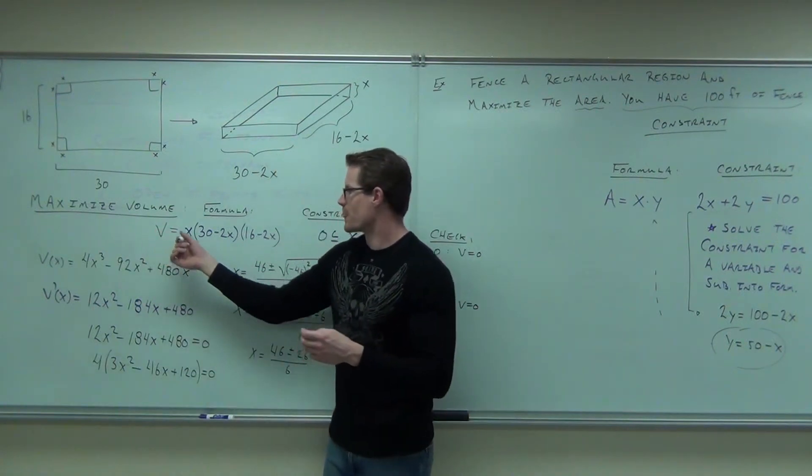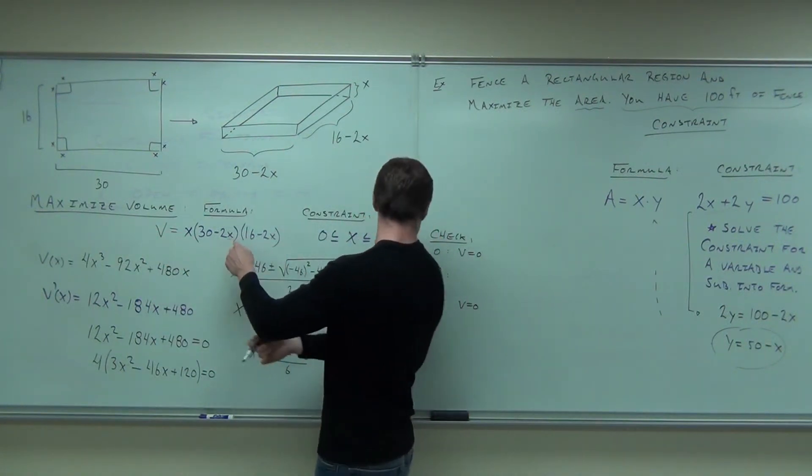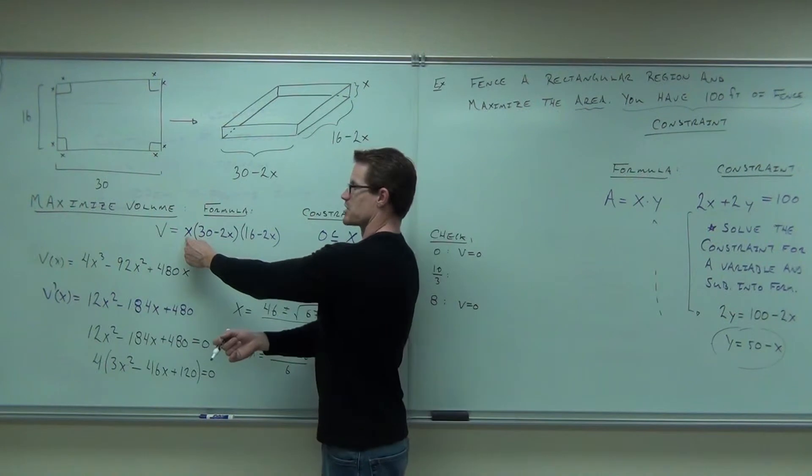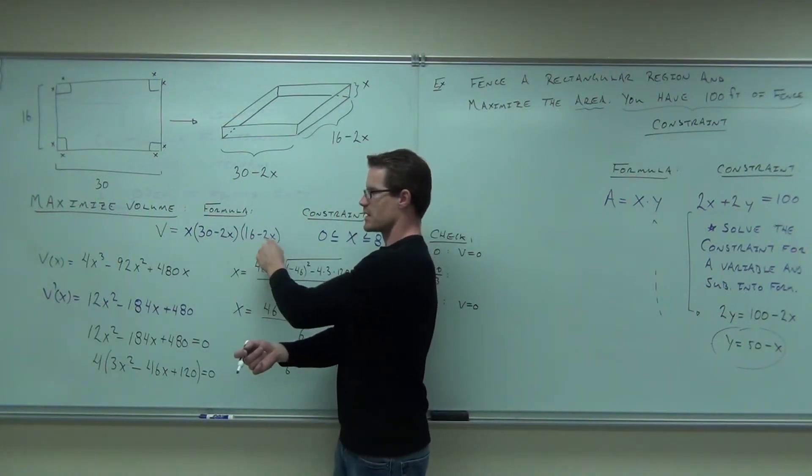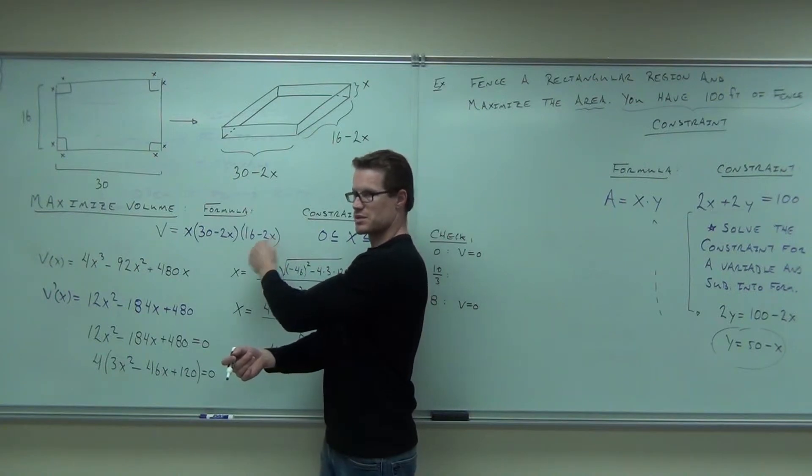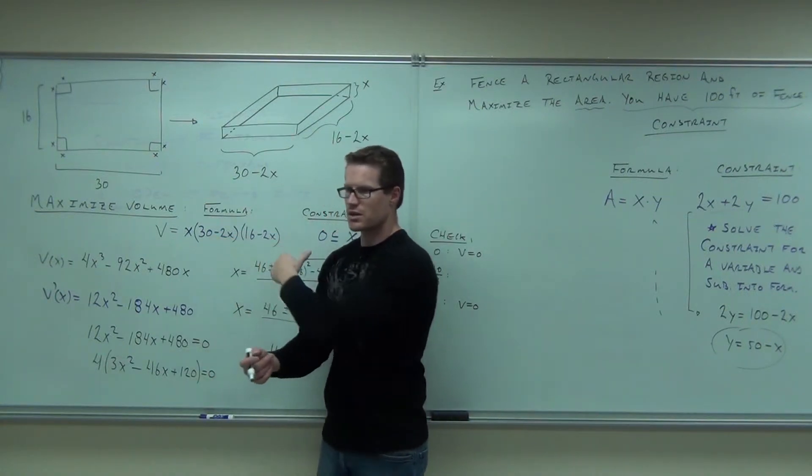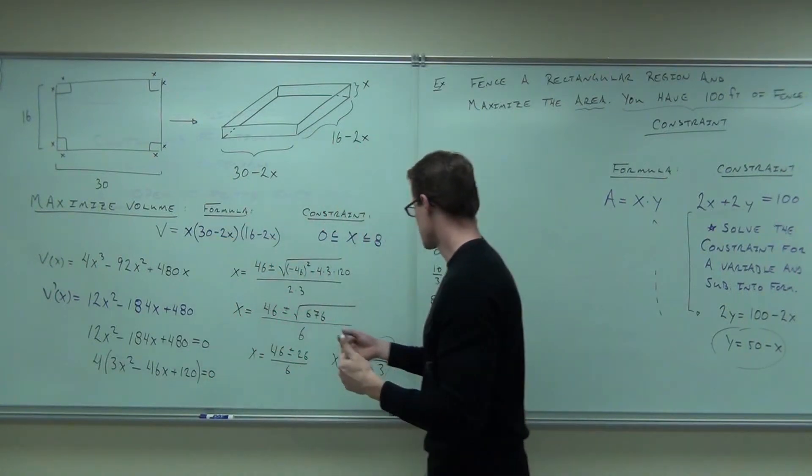Are you with me still so far? Look at your volume function. It says if you make a cut of 0, 0 times anything is 0. You make a cut of 8, 16 minus 8 times 2 is 0. That's times 0. So you're going to get a volume of 0.